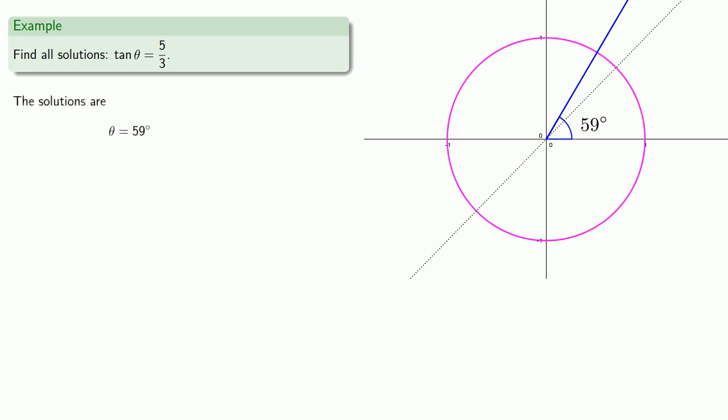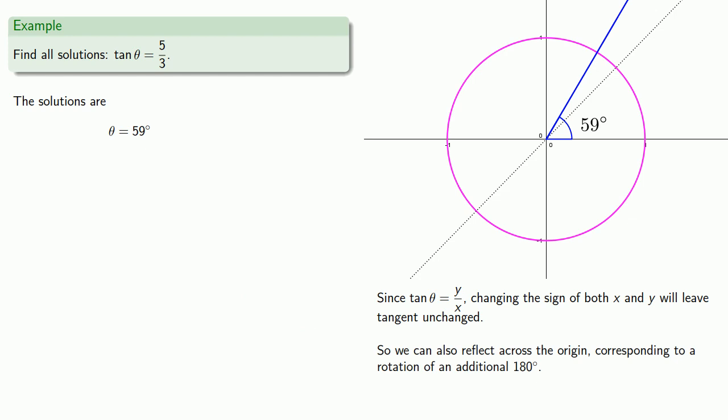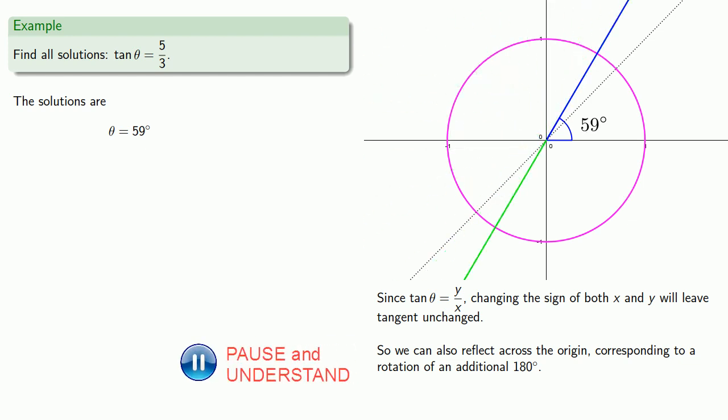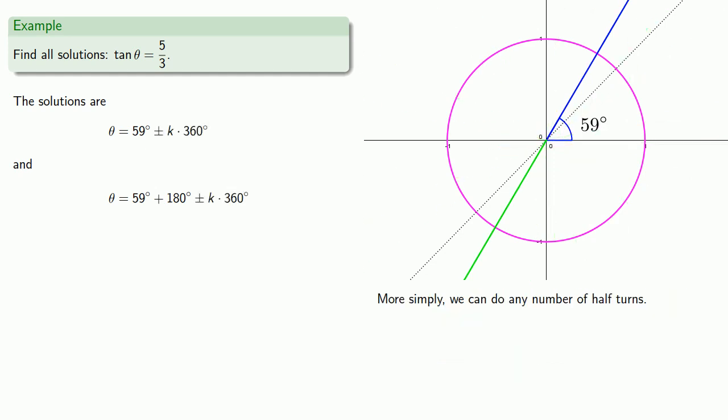Well, that gives us one solution. Now, since tangent is y over x, changing the sign of both x and y will leave the tangent unchanged. And so we can reflect this across the origin, which corresponds to a rotation of an additional 180 degrees. So another solution is going to be 59 degrees plus 180 degrees. And to either of these, we can go around any additional number of turns. So to either of these solutions, we can add any multiple of 360 degrees. And more simply, we can do any number of half turns from 59 degrees. So we can also express our solutions as 59 degrees plus any number of 180 degree turns.